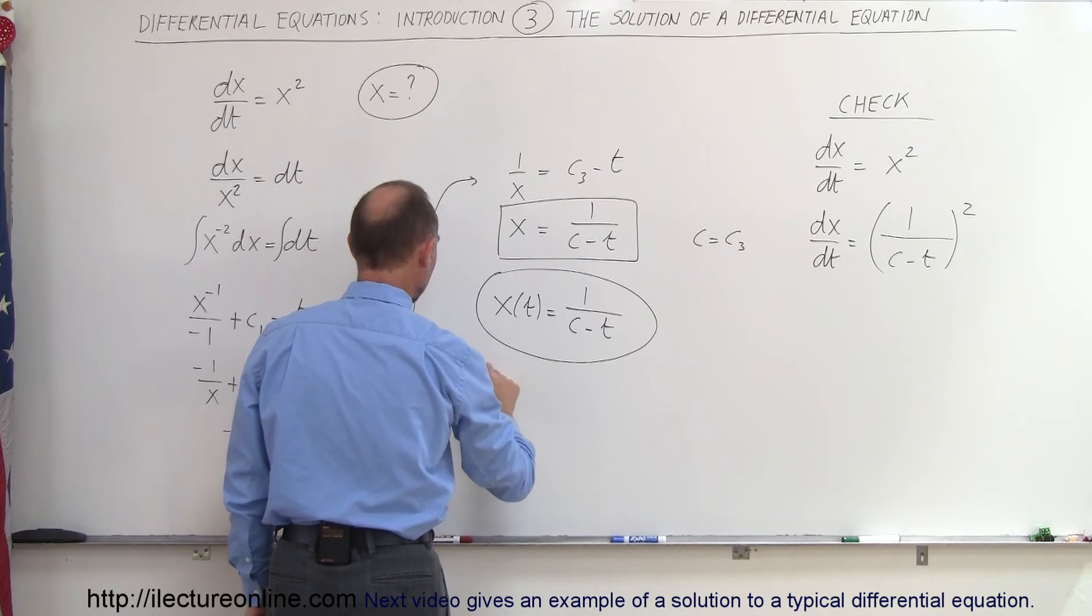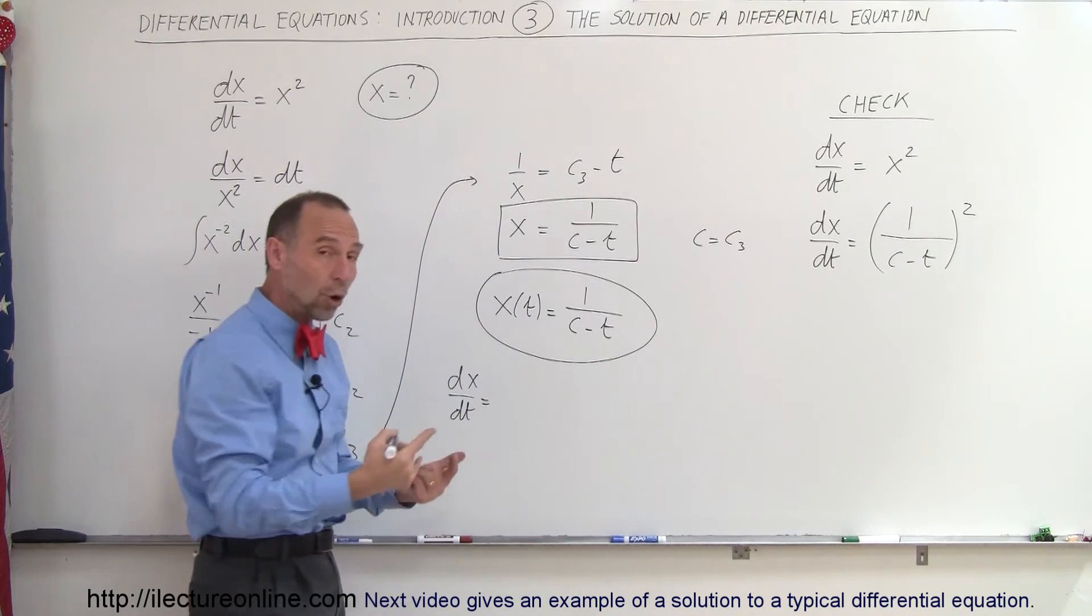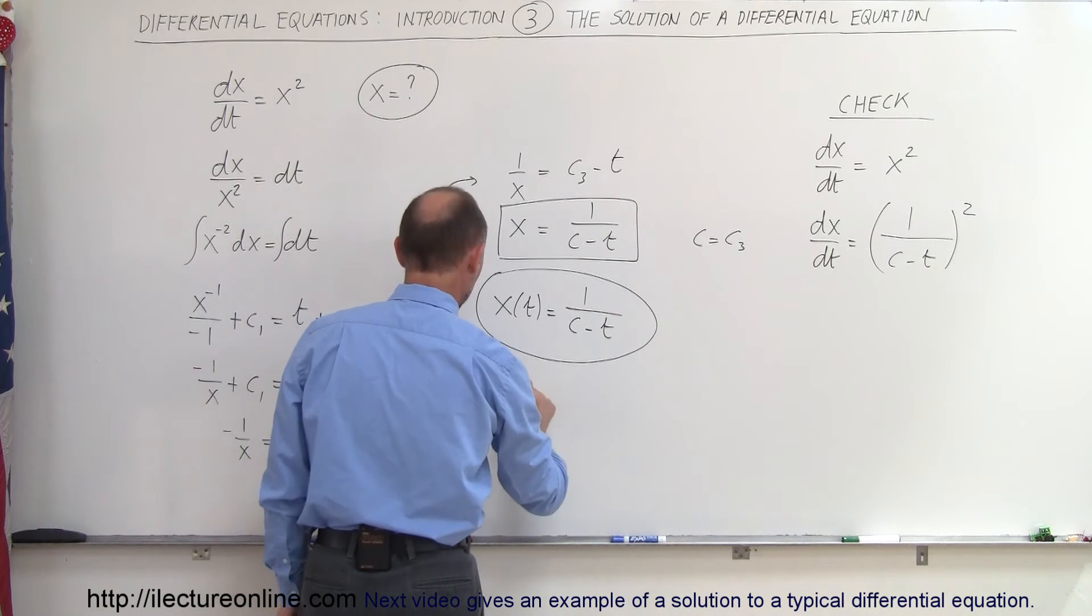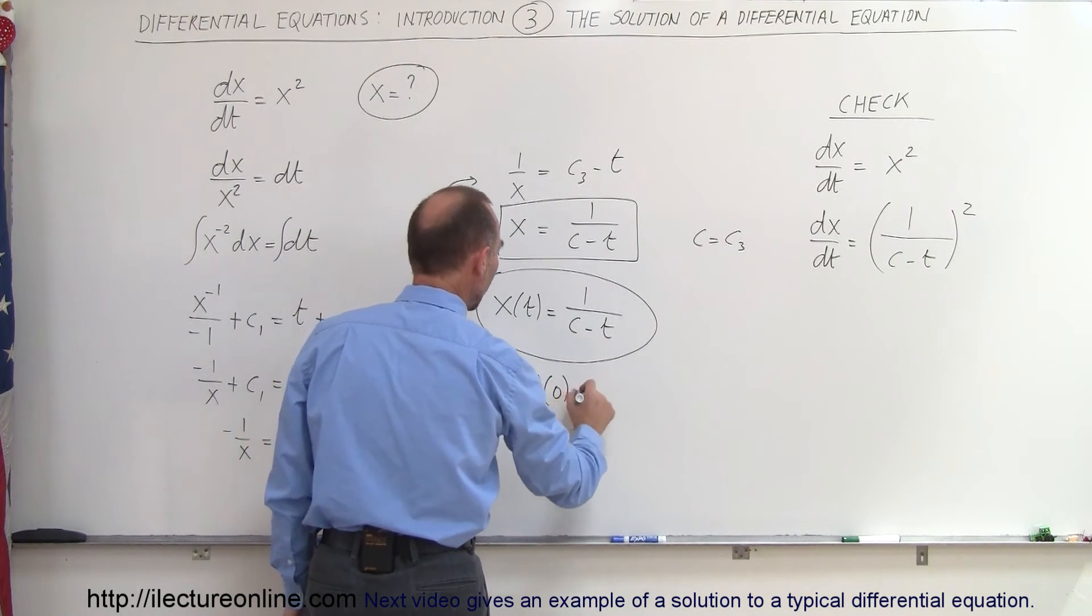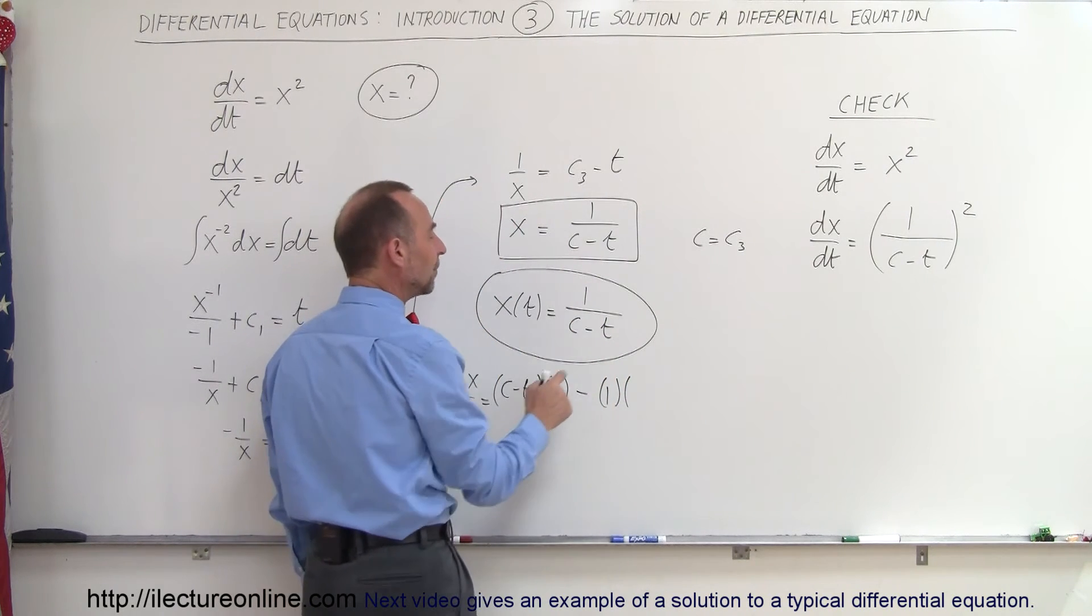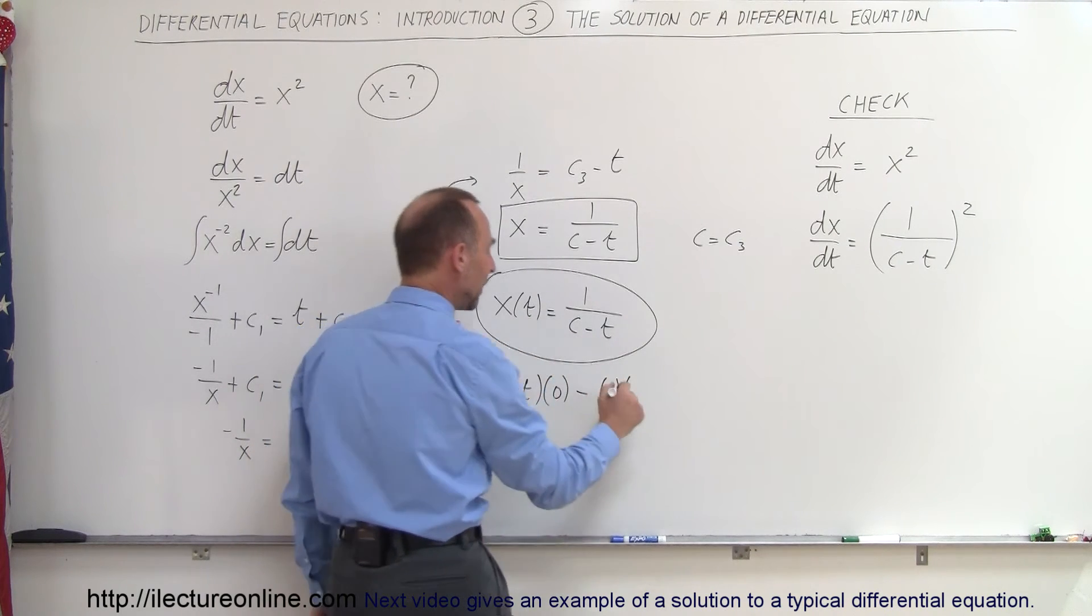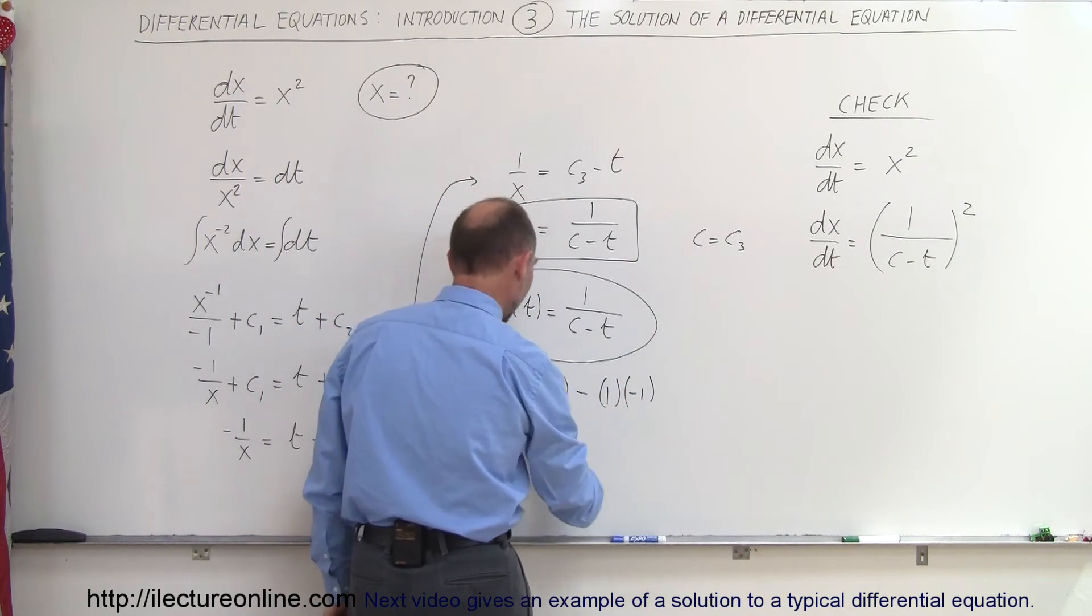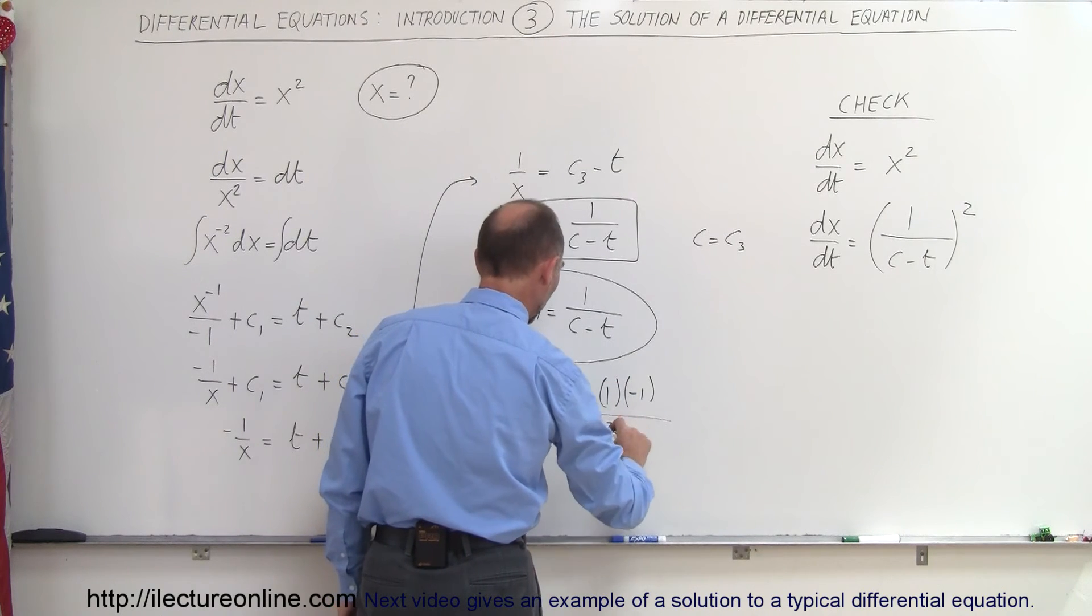So we're going to take the derivative, the dx/dt, which means we're going to take the denominator because it's a quotient. So we'll take the denominator c minus t times the derivative of the numerator which is 0, minus the numerator which is 1 times the derivative of the denominator, and of course that with respect to time, that's a constant, and so that would be a minus 1, all divided by the denominator squared, which is c minus t quantity squared.